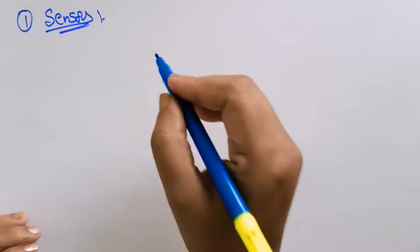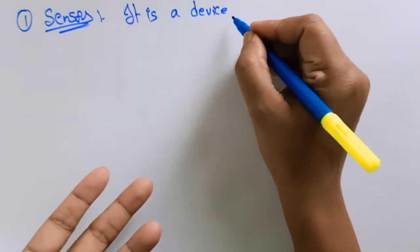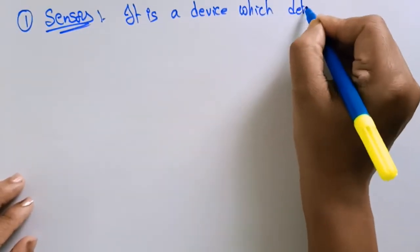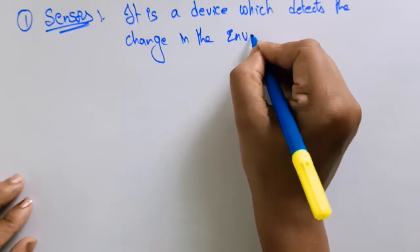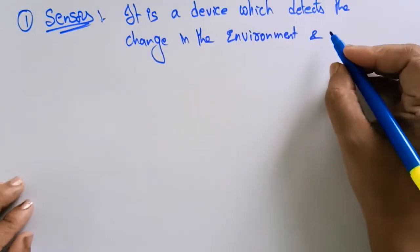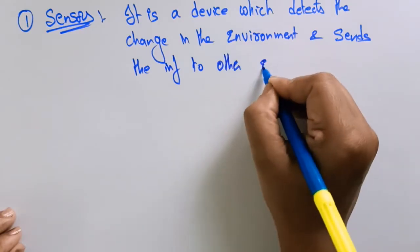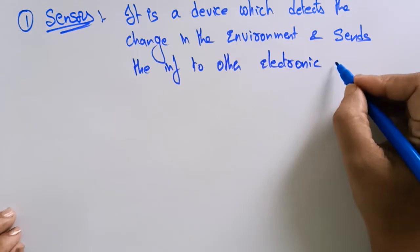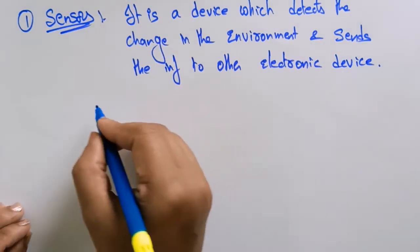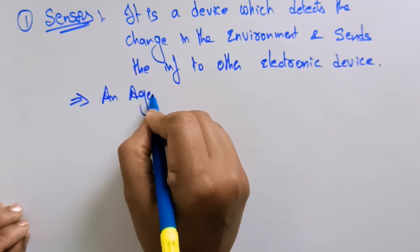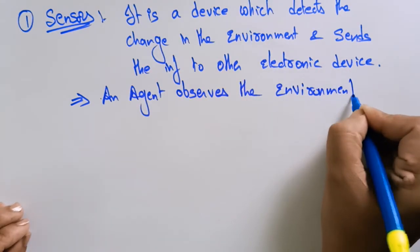So, what is a sensor? A sensor is nothing but a device. What is the role of this device? It detects the change in the environment, and senses that information to other electronic devices — whatever it is observing in the environment. An agent observes the environment through sensors only.